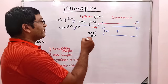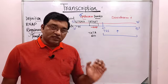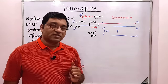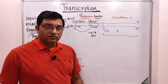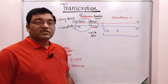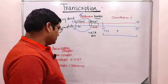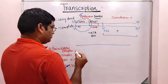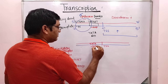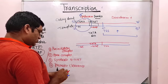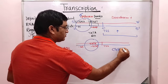Initially, the sigma factor of RNA polymerase scans the DNA, recognizes the consensus sequence at minus 35 upstream of the transcription start site, and initially binds to this minus 35 region. Then it stretches itself to bind the promoter region — that is the TATA box. This results in formation of the closed complex.